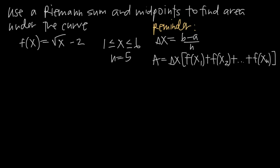In this particular problem, the function we've been given is f(x) = √(x - 2). We're going to be approximating the area underneath this curve and above the x-axis over the interval x from 1 to 6. You can also write this interval as 1 to 6 — it's the same thing, just written a different way.